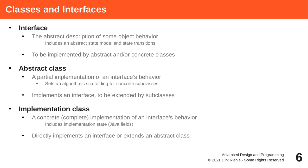When you call a command method on the object, you cause a transition in the state space from one valid state to another. The object should never be in an inconsistent state, and the way to manipulate an object is through an interface.